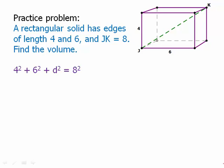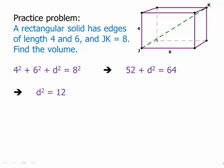So we'll just call that d, the depth. We have 4 squared plus 6 squared plus d squared equals 8 squared. 52 plus d squared equals 64. We get d squared equals 12. And then d has to be square root of 12. We take a positive square root because we're looking for a length, of course.